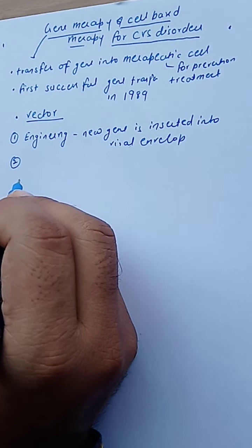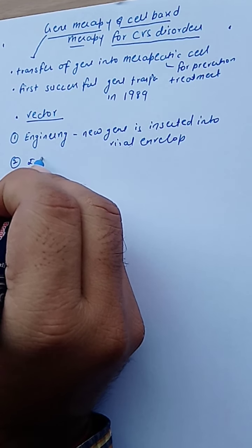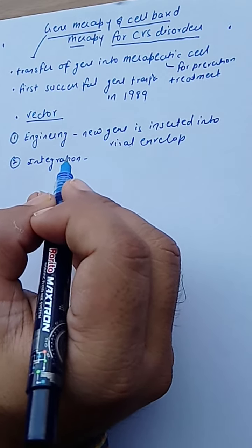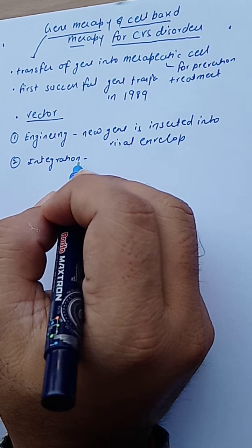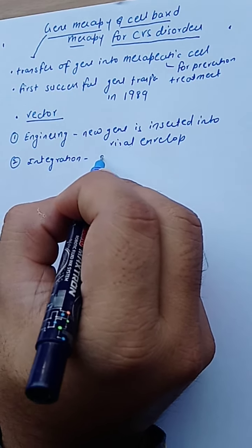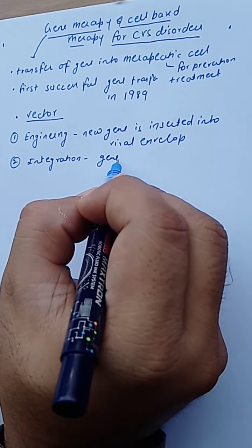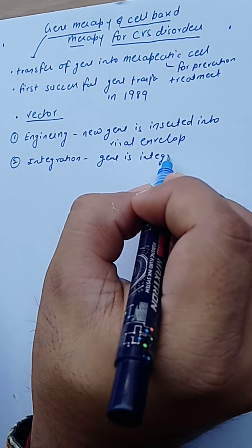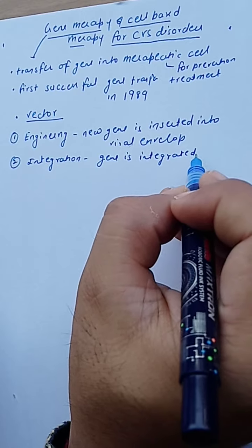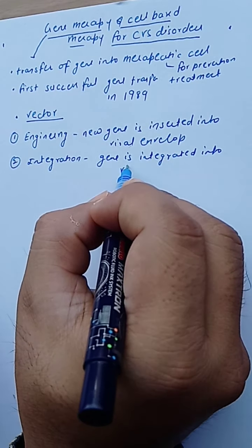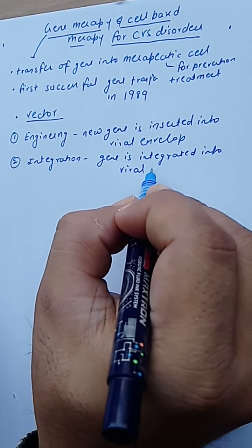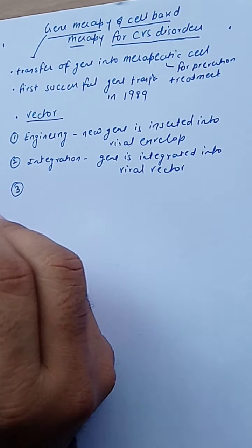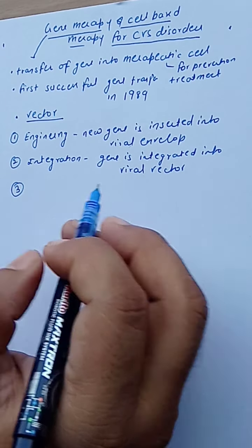The second step is integration. Integration means the gene is integrated into the viral vector.